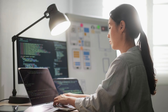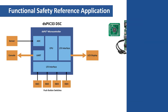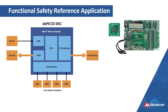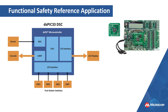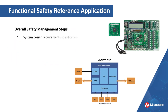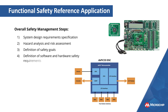If you are implementing functional safety in your designs for the first time, we also offer a reference application that showcases a safety-critical data-monitoring use case and helps you understand how to approach the broad and complex topic of functional safety. This demo application follows the steps listed in IEC-61508 for overall safety management and guides you to perform the following steps: system design requirement specification, hazard analysis and risk assessment, definition of safety goals, definition of software and hardware safety requirements, and safety mechanisms to implement in hardware and software.